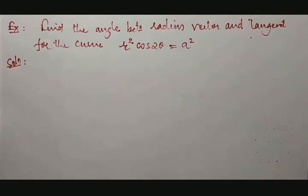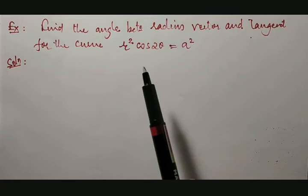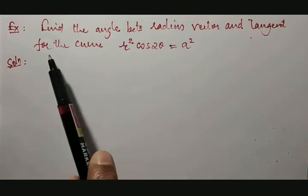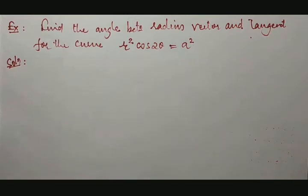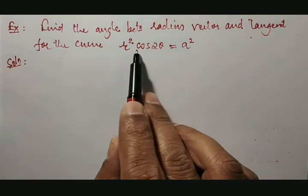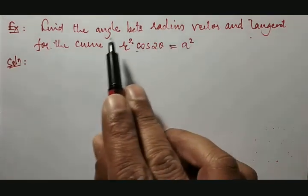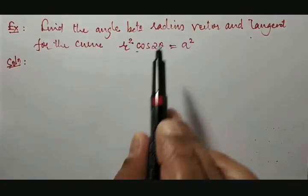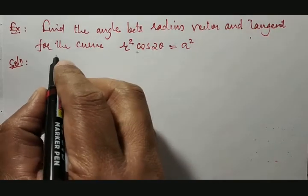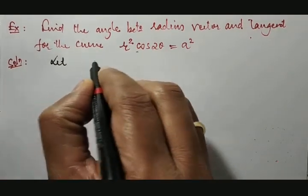In this session, we are going to find the angle between radius vector and tangent for the given curve r² cos 2θ = a². One thing we need to keep in mind: when the given curve is in polar form, the solution 99% of the time is possible after applying log on both sides.